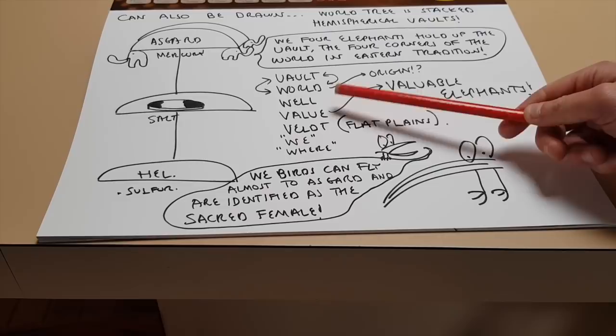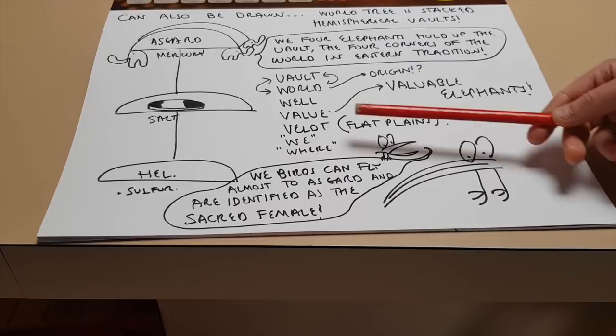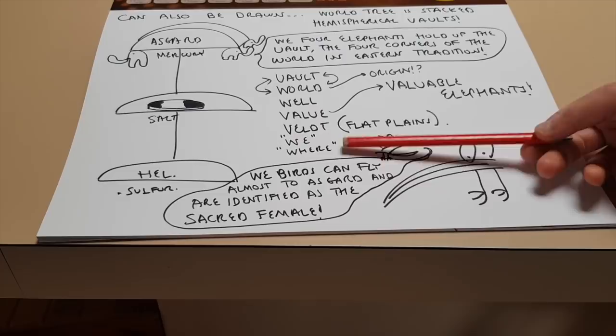So is vault the actual origin of world, or do they have a common ancestor? The elephants are holding up the world very well. And they are very valuable elephants indeed. And the veldt is also a South African word for flat plains. And of course, there are who, what, where, we, and why. Two of them, we and where, sound like world. So world is we. And world is where. Where is it? Where in this vast world?